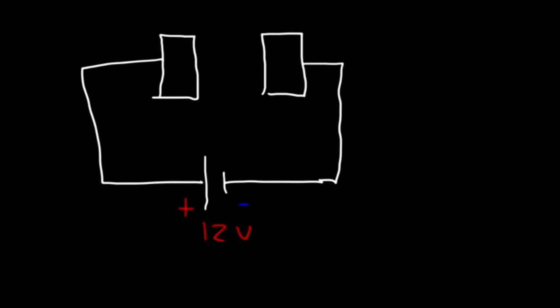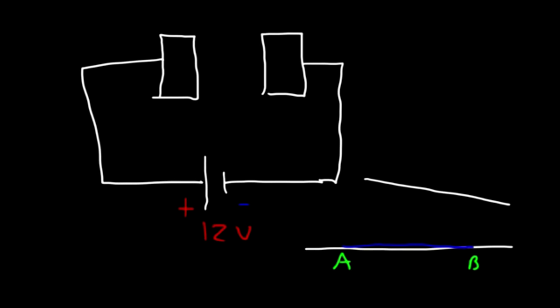If the voltage is zero, no electric current will flow. One way to think about this: if you have a level surface with water on it, the water will not flow because the height between position A and B is the same. However, if you increase the angle — put it on an incline where A is higher than B — water will flow from the high position to the low position. The more you increase the angle, the greater the velocity and acceleration. The same is true with voltage: current flows from a high electric potential to a low electric potential.